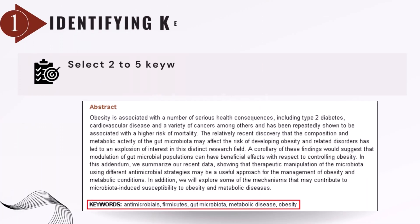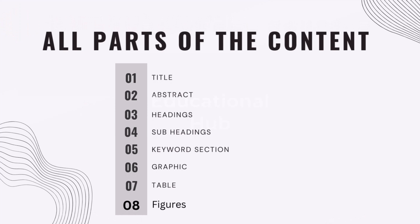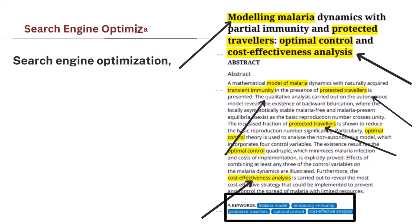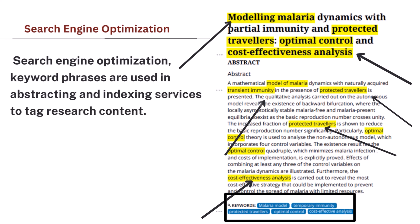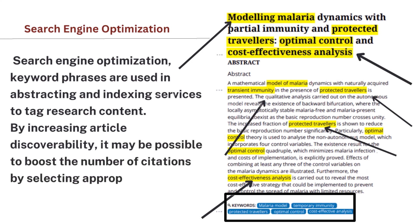Step 1: Identifying Keywords. Select 2-5 keywords you can use according to the topic of your research. All parts of the content, including title, abstract, headings, subheadings, keyword sections, graphics, tables, figures, file names, and description tags must be included with a keyword. More than search engine optimization, keyword phrases are used in abstracting and indexing services to tag research content. By increasing article discoverability, it may be possible to boost the number of citations by selecting appropriate keywords.